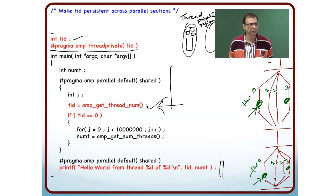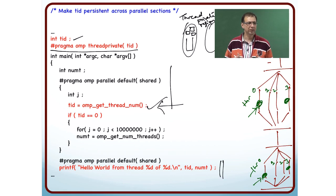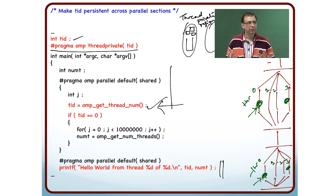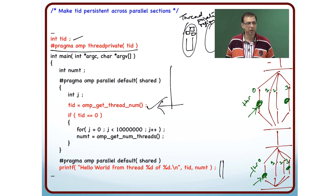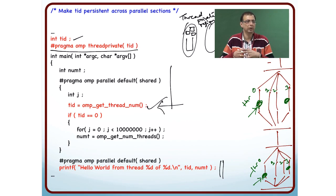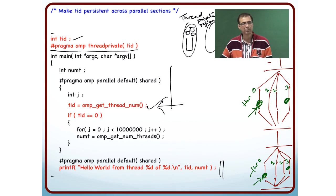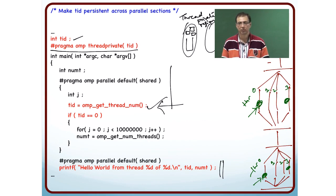This is important because when setting up threads, a lot of times you start maintaining some state in every thread — what work it is supposed to do and so on. When you are done with a particular parallel region and later want to start another one, you already know what work you were supposed to do. That is stored in a thread private variable; you just pick it up and continue.